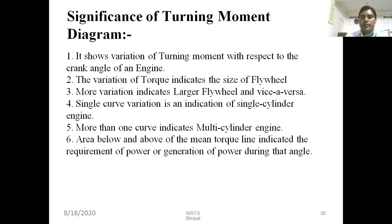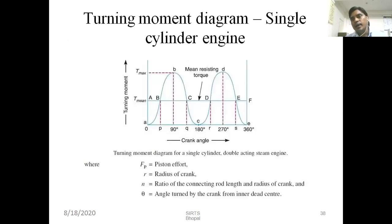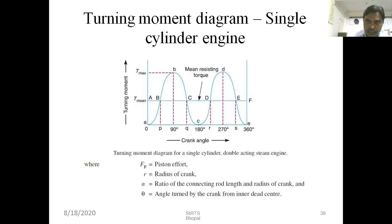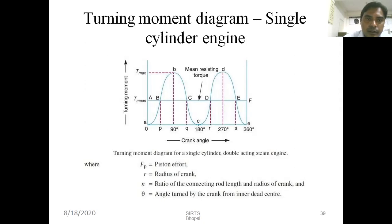I would like to explain the turning moment diagram with the help of a single cylinder double-acting steam engine. I hope you all know the working of the steam engine. In this figure, you can see we have a curve. The curve starts from small a, capital B, small b, capital C, and small c. As per the definition, the area under the curve represents the turning moment, so area under the curve is the turning moment.